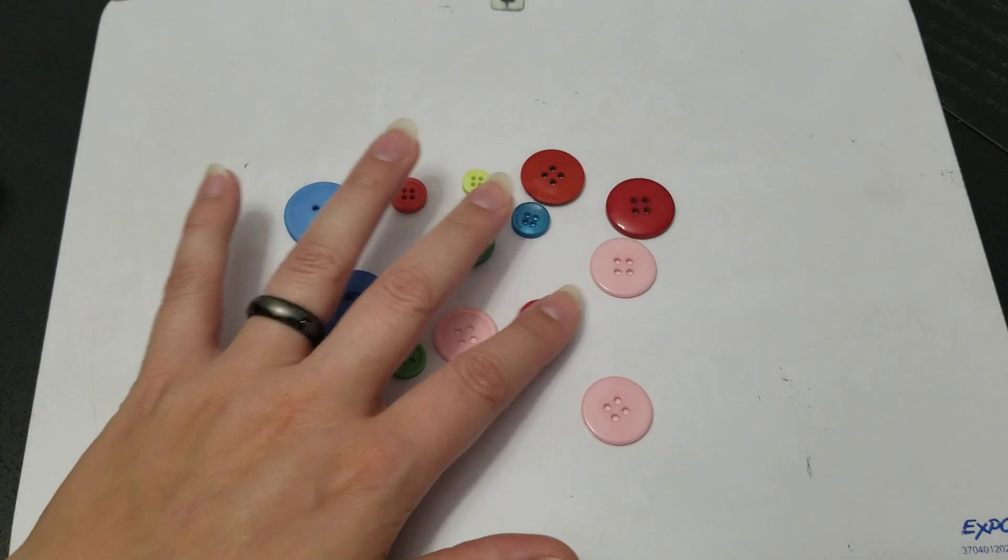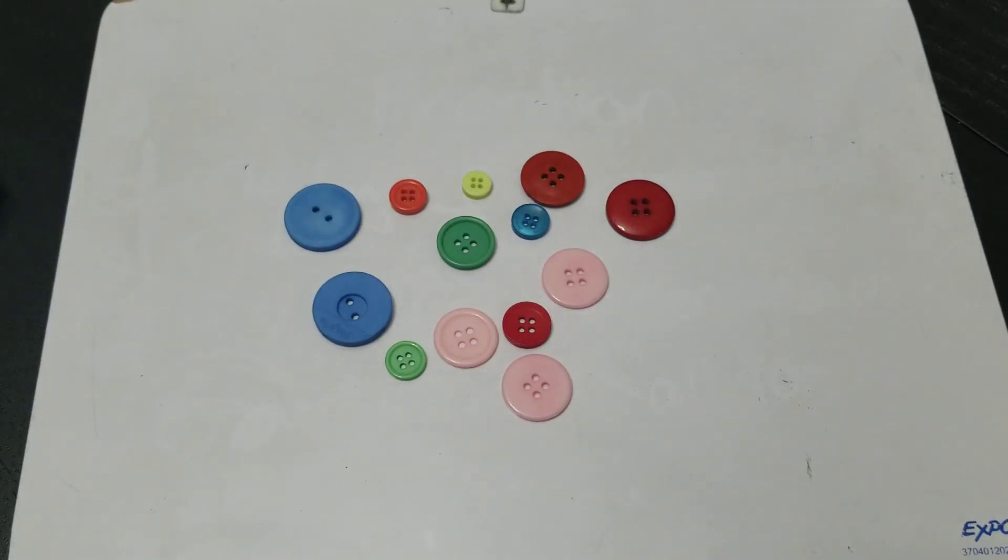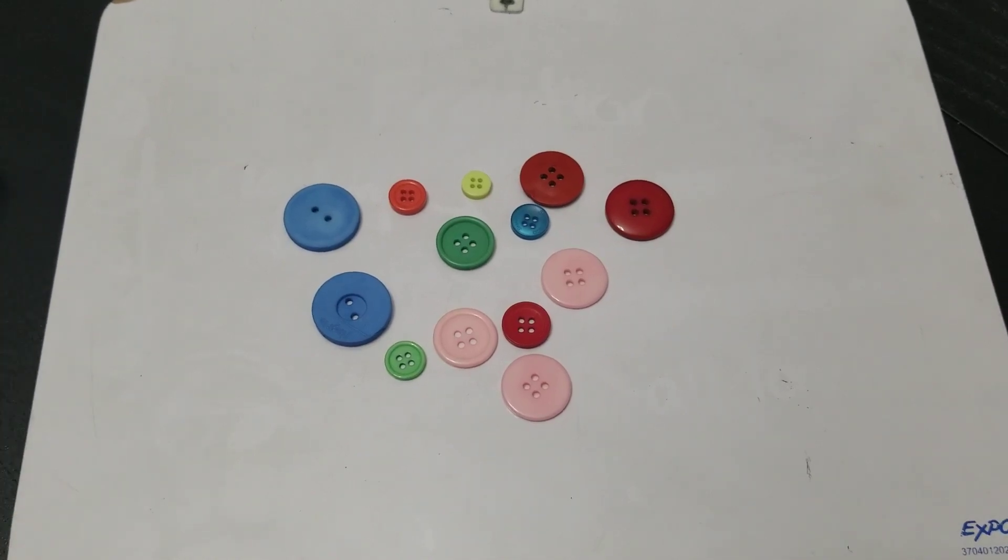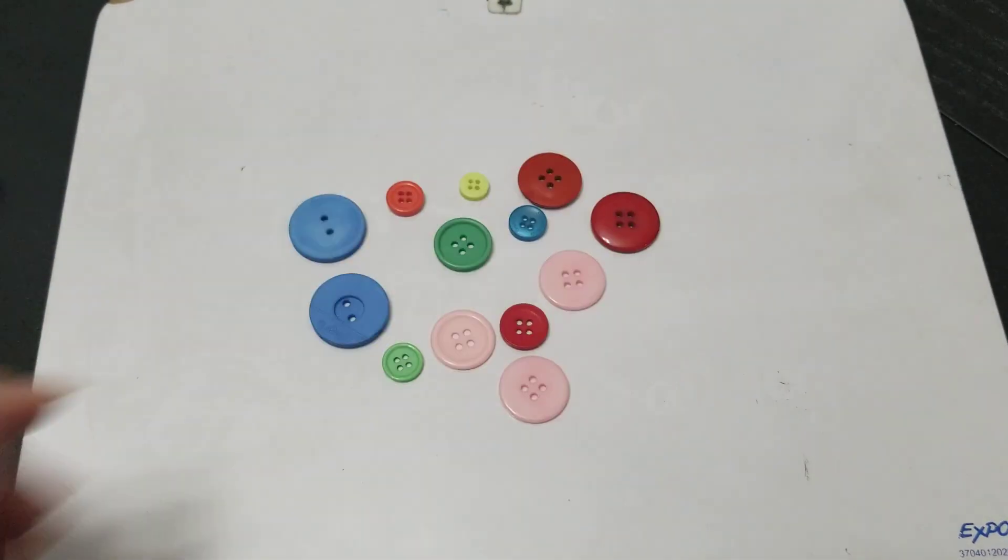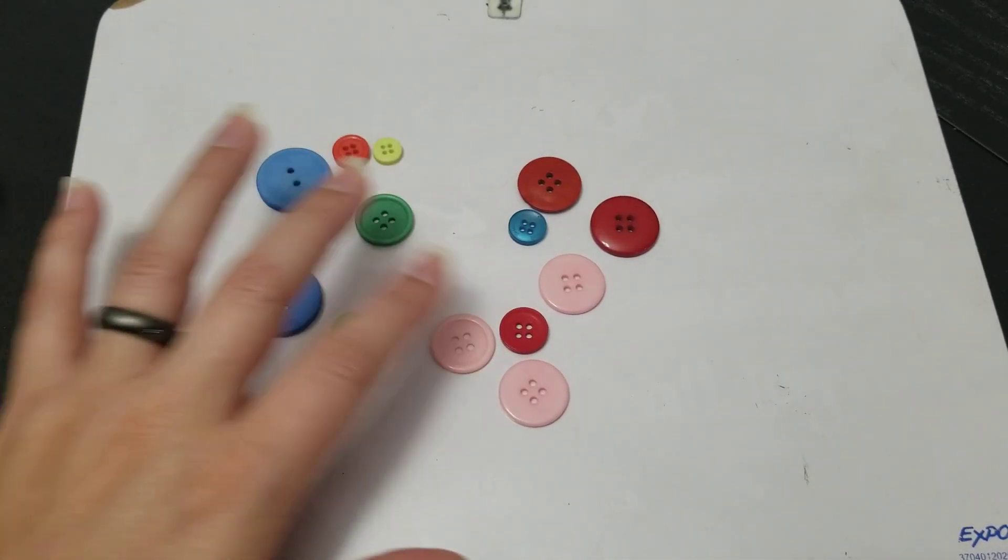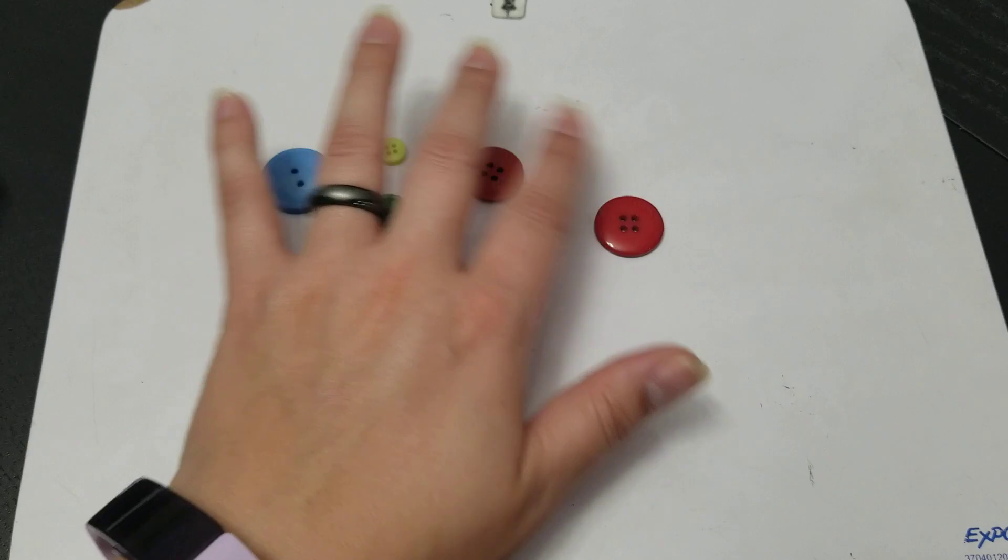So my first job is to determine how many buttons I have all together because I need that for my numerator and my denominator of my fraction. So my all together number is my denominator. So I'm going to count 1, 2, 3, 4, 5, 6, 7, 8, 9, 10, 11, 12, 13.